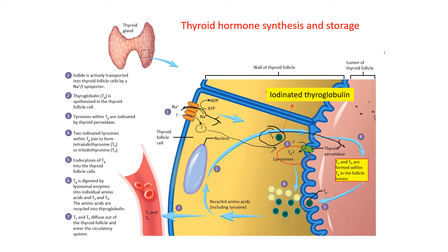When the body needs T3 and T4, thyroglobulin is brought back into the follicular cell where it will be transformed into T3 and T4. T3 and T4 are then secreted into the blood.